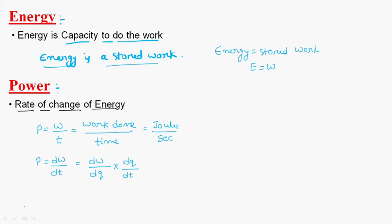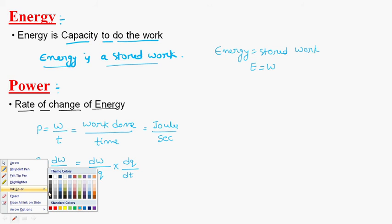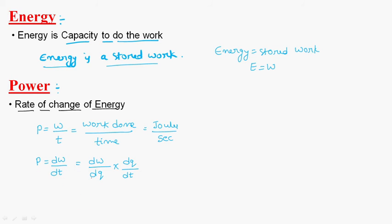What is dW by dq? Work done per charge. What is work done per charge? It is nothing but voltage. Charge by time is nothing but current. Simply, power is equal to V into I.